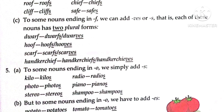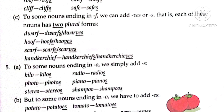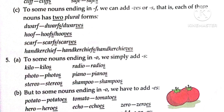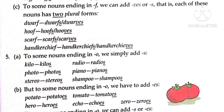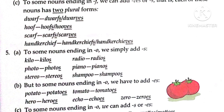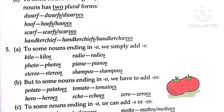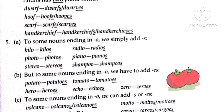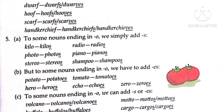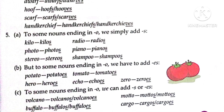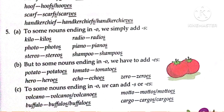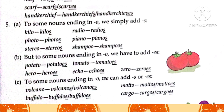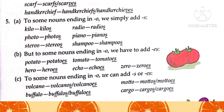Also, handkerchief → handkerchiefs or handkerchieves — both forms are acceptable. Number five, part A: for some nouns ending in O, we simply add S. Examples: kilo → kilos, radio → radios, piano → pianos, stereo → stereos, shampoo → shampoos. Part B: for some nouns ending in O, we add ES. Examples: potato → potatoes, tomato → tomatoes, hero → heroes, echo → echoes, zero → zeros.